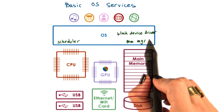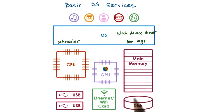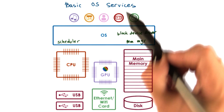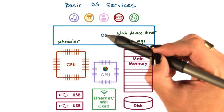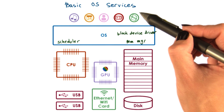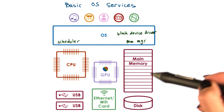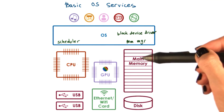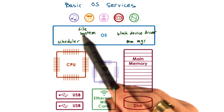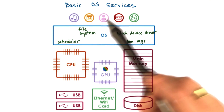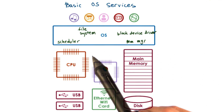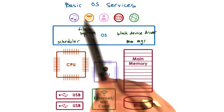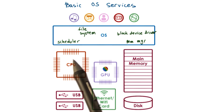A block device driver is responsible for access to a block device like disk. In addition, the operating system also exports higher level services that are linked with higher level abstractions, as opposed to those that are linked with abstractions that really map to the hardware. For instance, the file is a useful abstraction that's supported by virtually all operating systems, and operating systems integrate a file system as a service.